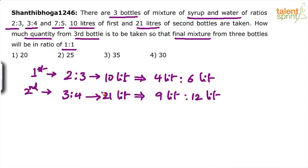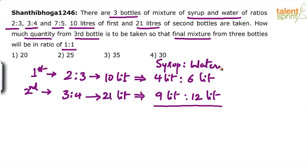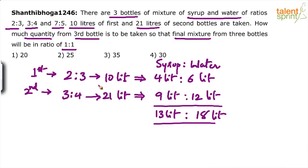Now looking at the mixture of the first and second bottles combined — syrup versus water — how much syrup do we have? 4 plus 9 equals 13 liters. And how much water? 6 plus 12 equals 18 liters. So after mixing 10 liters from the first bottle and 21 liters from the second, we have 13 liters of syrup and 18 liters of water.